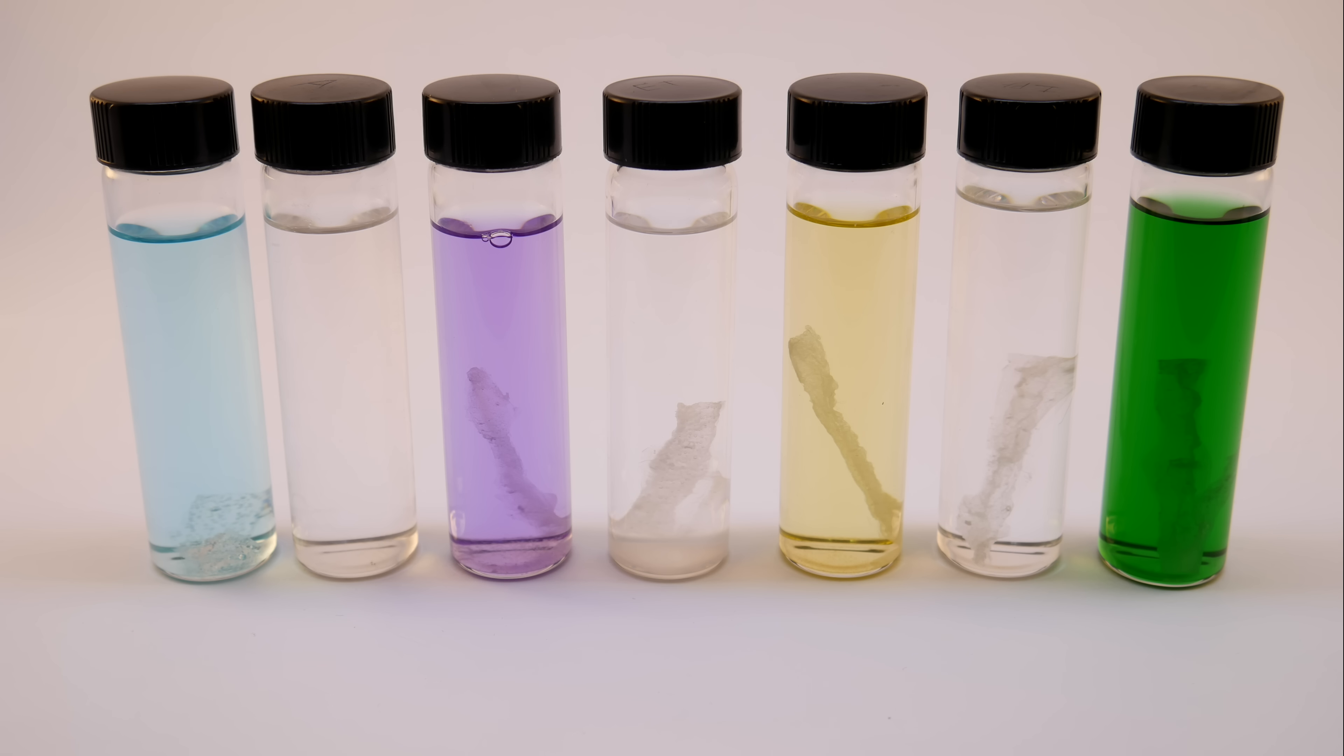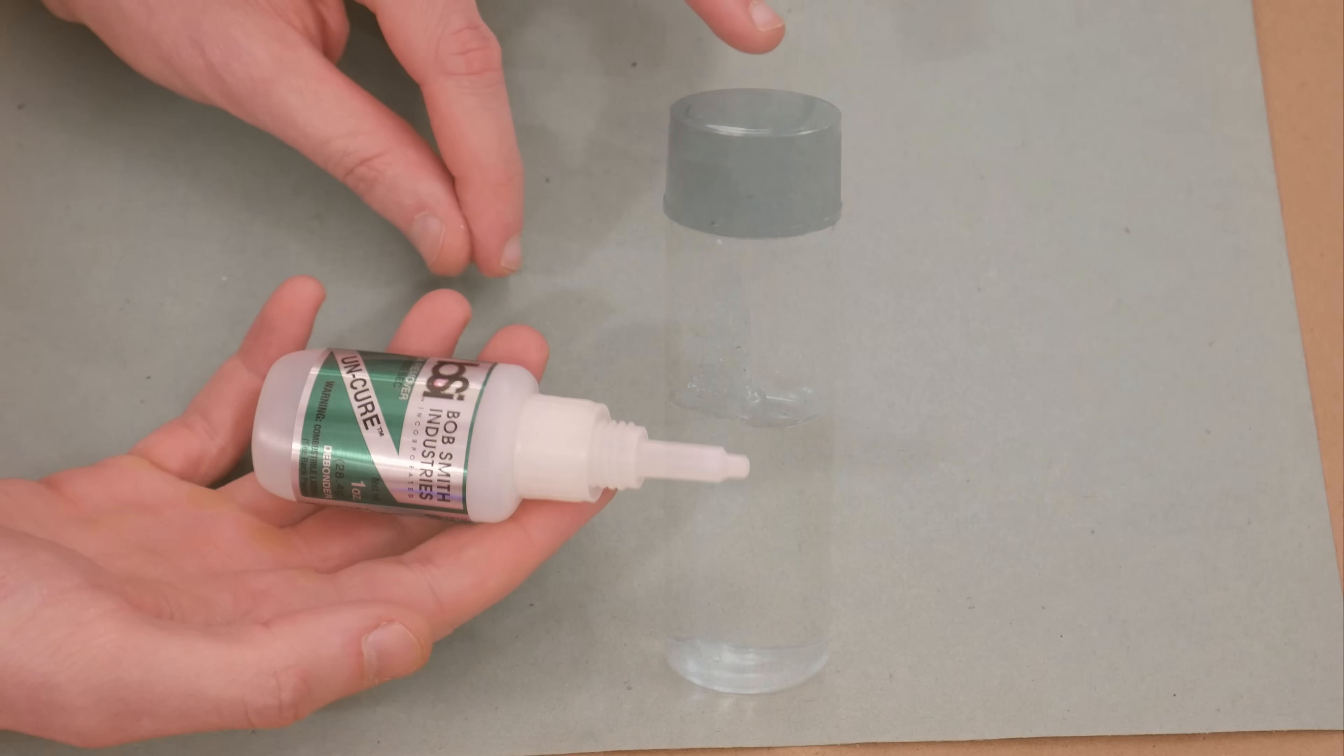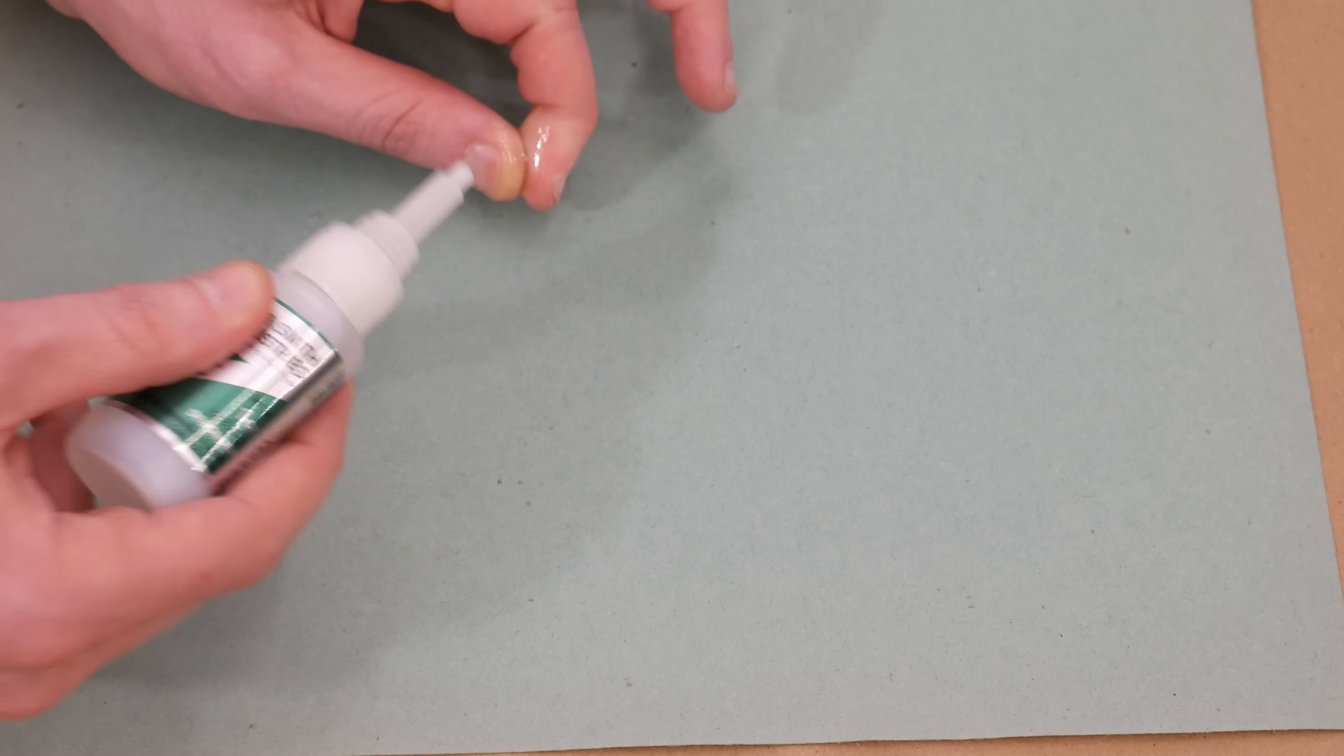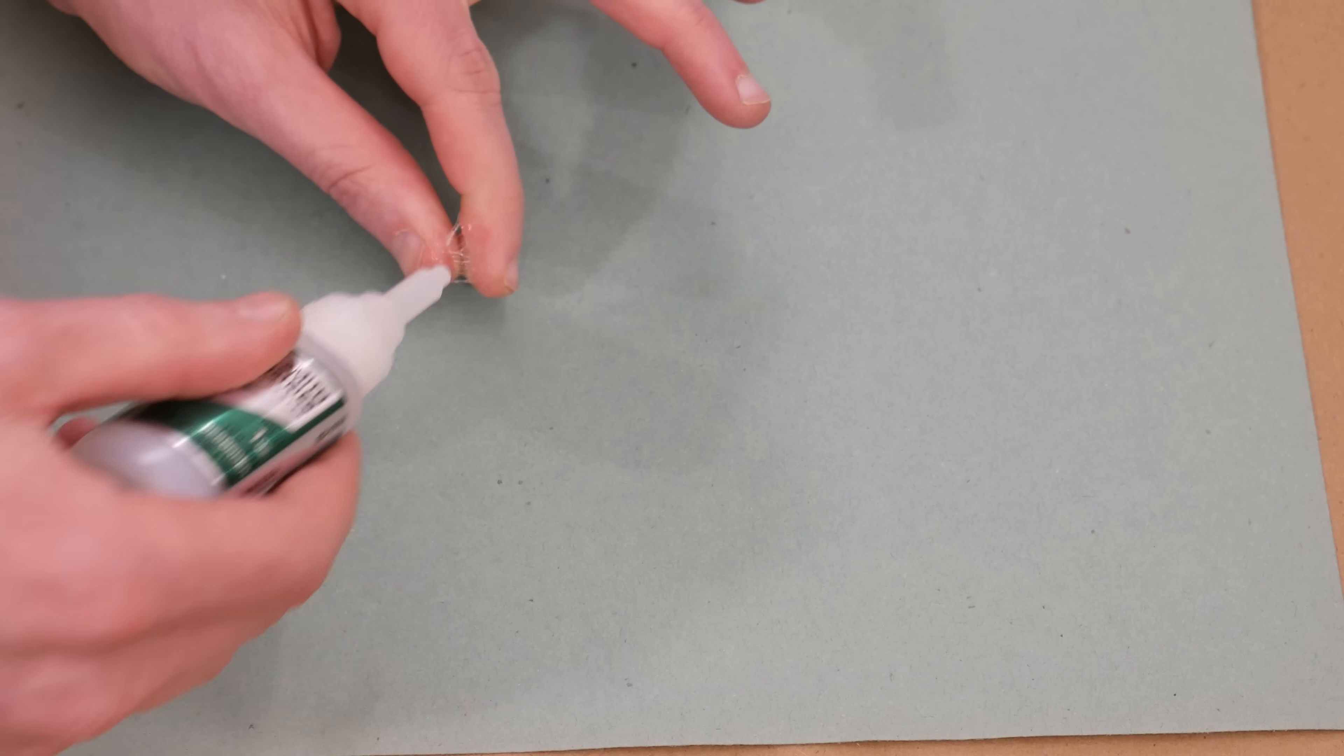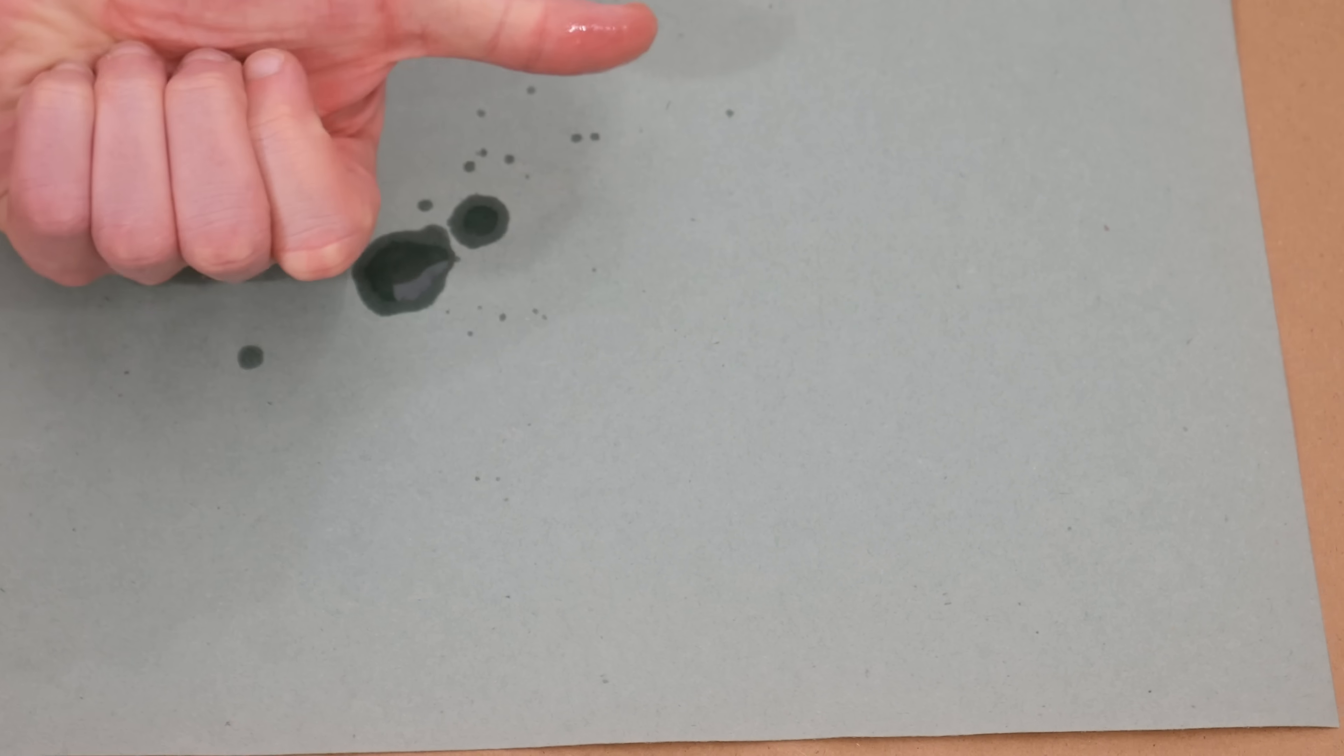Of course, since filming this little test, I was reminded that products are sold specifically for debonding superglue. This is BSI Uncure, and it works. These debonders are typically composed of dimethylformamide, also known as DMF. This is just another common organic solvent which is capable of solvating chains of polyethylcyanoacrylate. Okay, let's give this debonder a real test. It works.